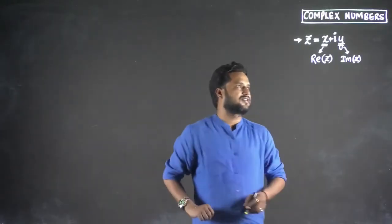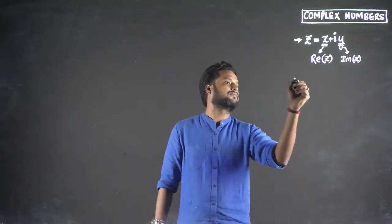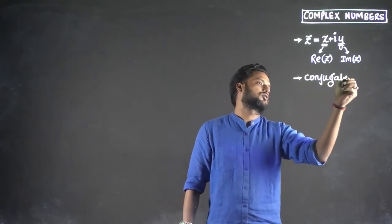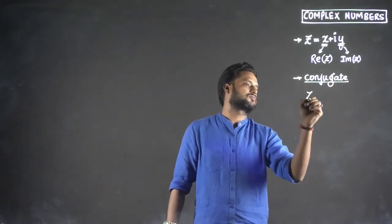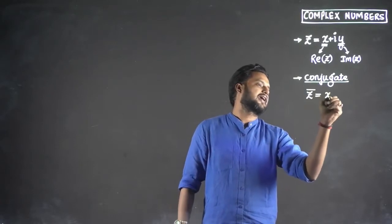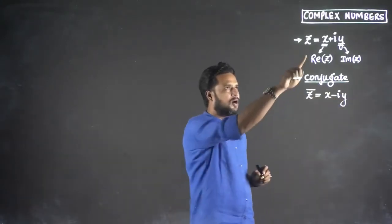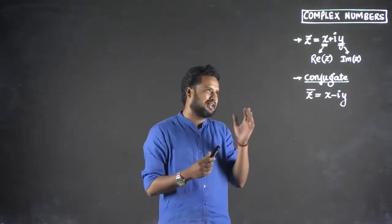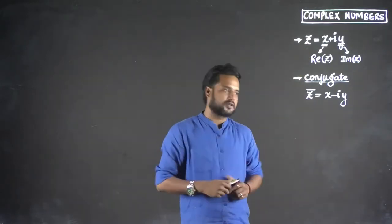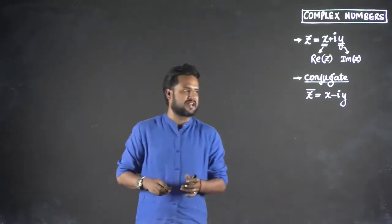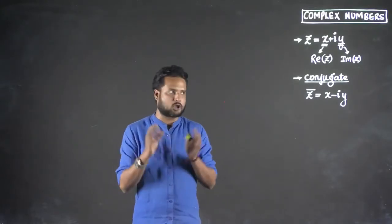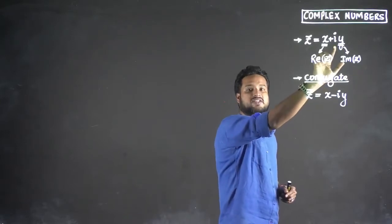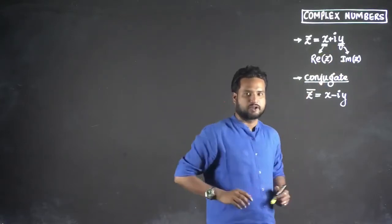So if I consider this as a complex number, then what is z-bar? It is something called the conjugate. And z-bar is nothing but x minus iy. Conjugate means what? If I have a number as 2 plus 3i, simply change the sign of i — that becomes the conjugate of a complex number. The i term here is nothing but the square root of minus 1.